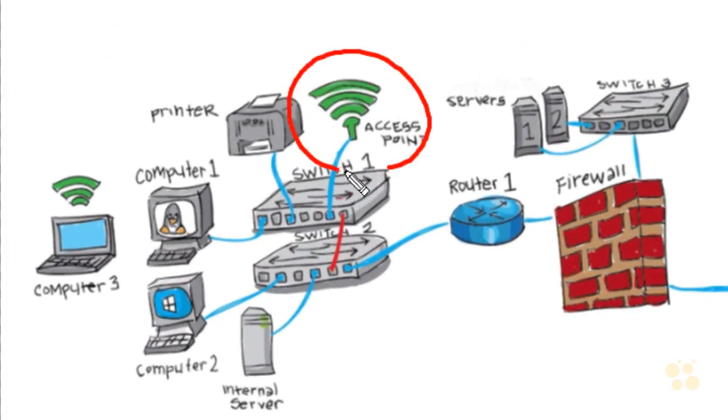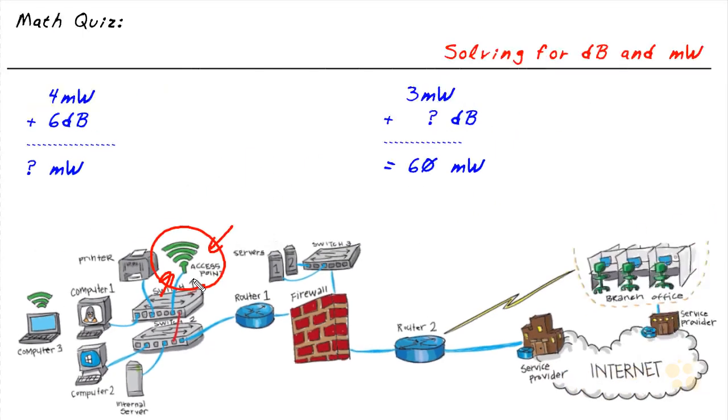In our scenario here, let's say we have this access point, and our boss walks up to us and says, this access point is currently operating at a transmitting power of 4 milliwatts. I'd like you to increase that by 6 decibels. And as a result, what would the actual transmit power be on this access point if we increased it by 6 decibels? Instead of saying, Oh my gosh, how do we start?